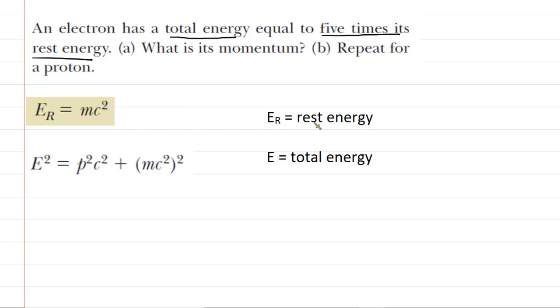we need to determine the momentum of an electron whose total energy is equal to five times its rest energy. Now in this chapter, we have learned that rest energy is symbolized by E sub R, and total energy is represented by E. So that initial statement that says total energy is equal to five times the rest energy, we could translate that into a simple equation. We could say that the total energy E is equal to five multiplied by the rest energy.